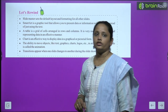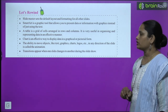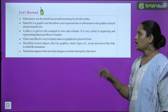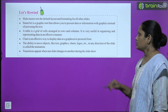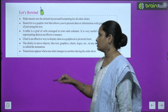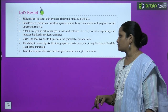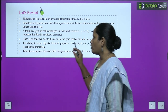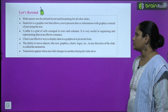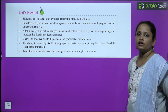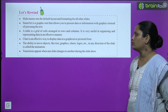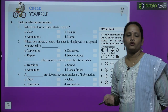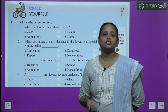Let's review what we've learned: SmartArt is a graphic tool that allows you to present data or information with graphics instead of just using text. A table is a grid of cells arranged in rows and columns, very useful in organizing and representing data. A chart is an effective way to display data in a graphical or pictorial form. The ability to move objects like text, graphic, chart, logo, etc. on a slide is called animation. Transition appears when one slide changes to another during the slide show.